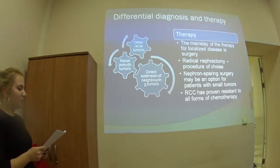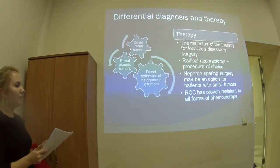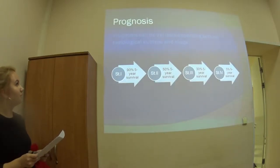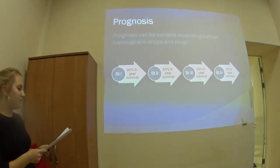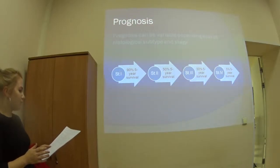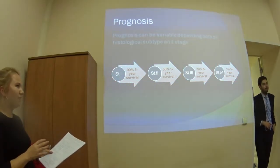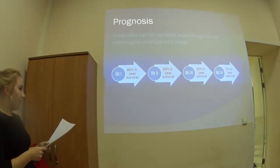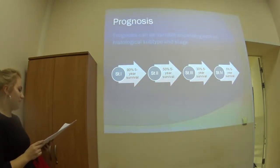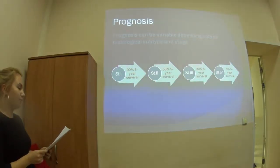As renal cell carcinoma has proven resistance to all forms of chemotherapy, the mainstay of therapy is surgery. Radical surgery is the procedure of choice. Prognosis is variable depending on histological subtype and stage. The papillary variant carries the best prognosis with five-year survival of about 90%, followed by clear cell renal carcinoma at about 70% five-year survival, while the collecting duct subtype carries the worst prognosis.